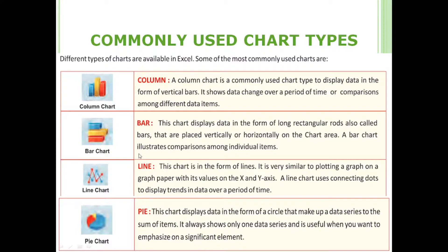The bar chart displays data in the form of long rectangular rods, also called bars, that are placed vertically or horizontally on the chart area. The bar chart illustrates the comparison among individual items. A line chart is similar to plotting a graph on graph paper with x-axis and y-axis values; it uses connecting dots to display trends in data over a period of time.